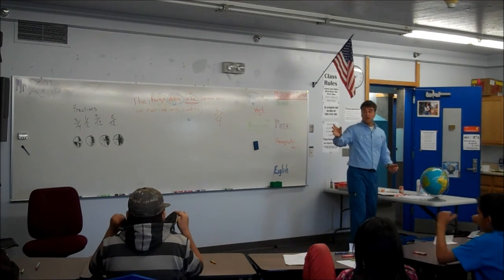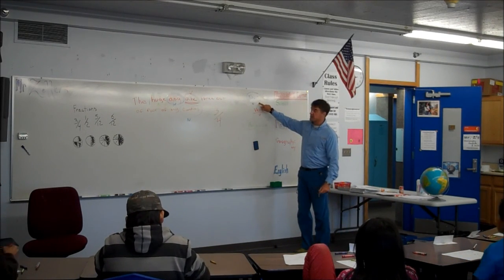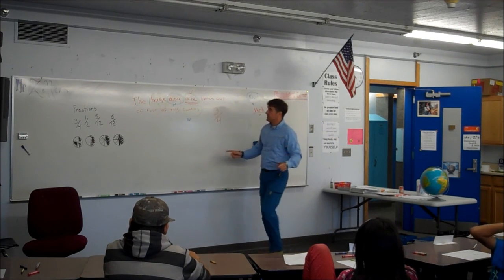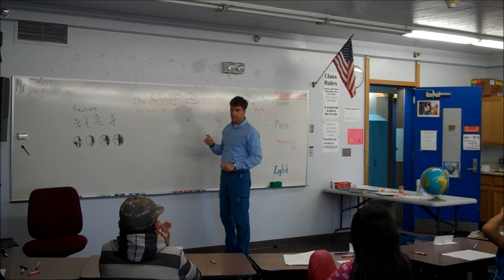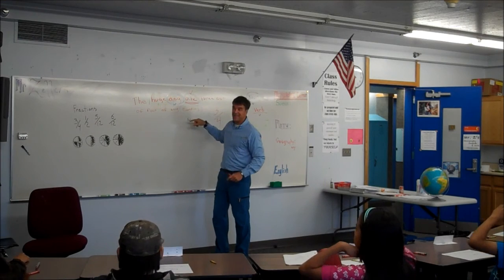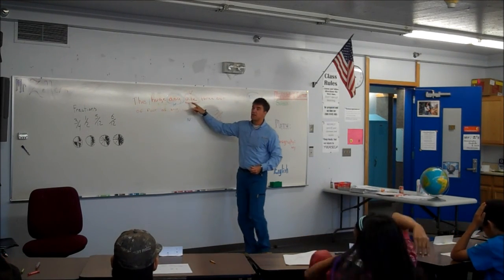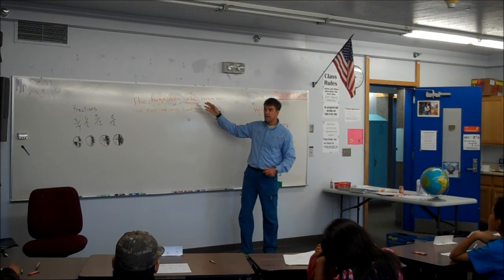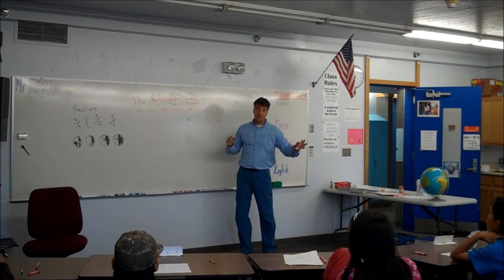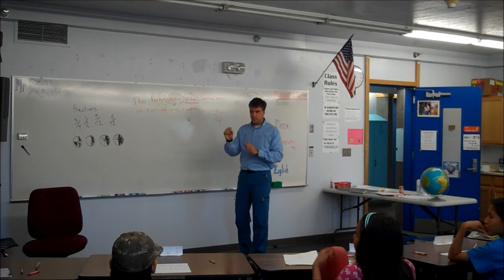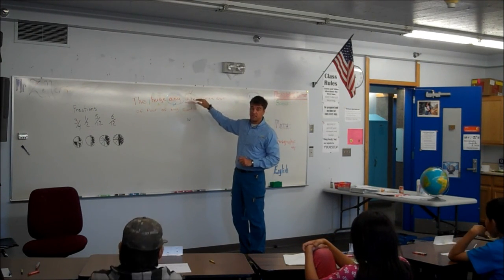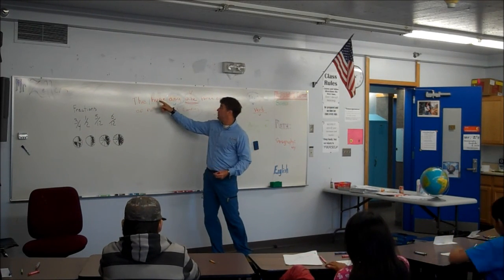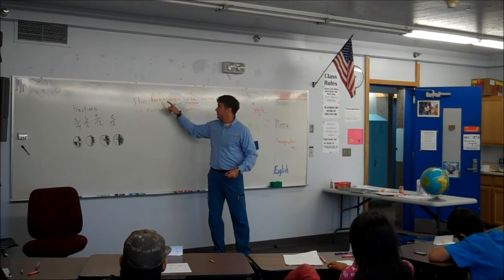Grace, what we did here is we circled the nouns. In this sentence we have two nouns. Nouns are the names of people, places, things. They found dog. Take your blue crayon, circle dog and candies, and put an N there so we know it's a noun. Then we underlined ate — that's our verb — and we wrote a V either above or below it. And huge — draw a box around it and put an A, because huge describes what kind of dog.